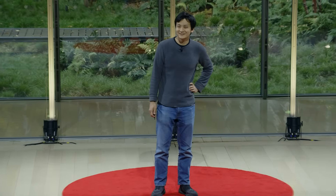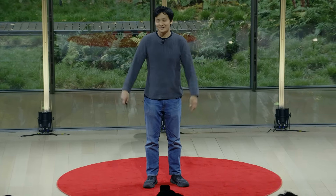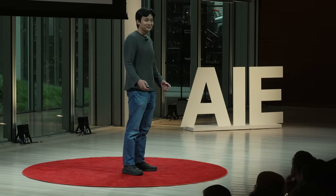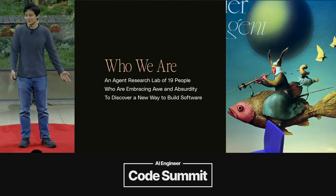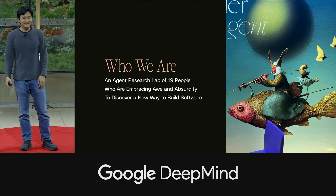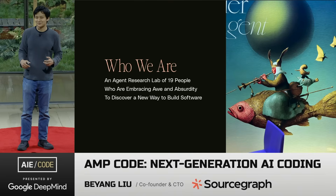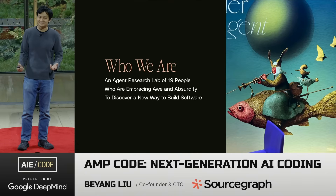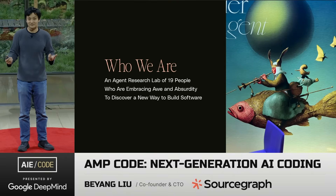How's everyone doing today? Pretty cool conference, huh? My name is Vyong. I'm here to talk about AMP — AMP is an opinionated frontier agent. So before I get into what that means, who are we? We're the bunch of weirdos downstairs at the booth with the weird Pied Piper dude on the floating golden fish. And I think that kind of captures the ethos of what we're trying to do with AMP — leaning into that sense of awe and absurdity that we all experience living in this weird world where agents are writing an increasingly large amount of our code.